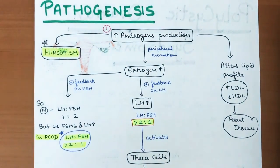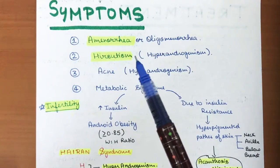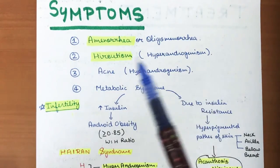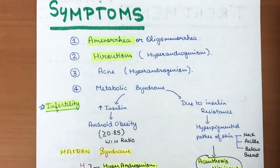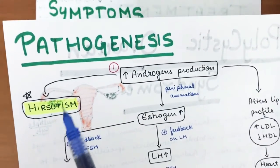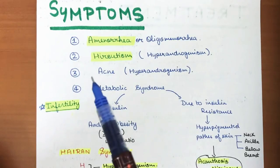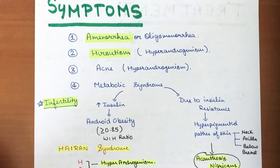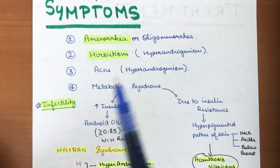The main symptoms seen in PCOD girls include amenorrhea, oligomenorrhea, and hirsutism — which is mainly due to hyperandrogenism causing abnormal hair growth. Due to high testosterone production, acne is also more prevalent, as high testosterone levels in the body lead to acne formation.